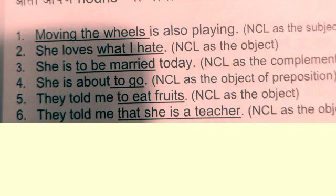For example: in 'Kumar is playing,' Kumar is a noun functioning as subject. In 'She loves tea,' tea is a noun functioning as object. In 'She is a girl,' girl is a noun functioning as a complement. And in 'She lives in Delhi,' Delhi is a noun functioning as the object of preposition. Remember, there can be a noun phrase, a noun, or a noun clause in place of subject, object, complement, or object of preposition.